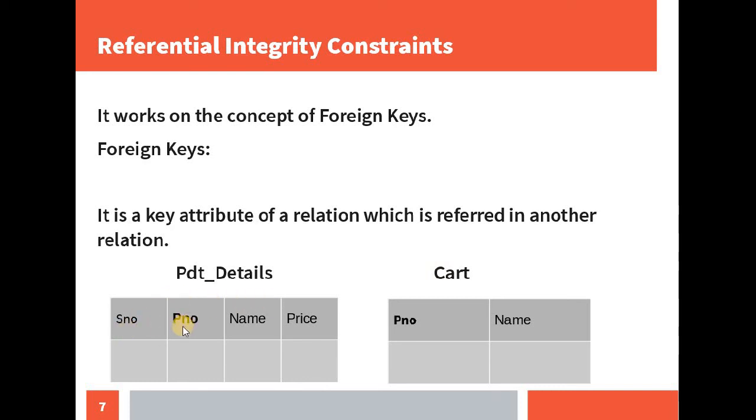Here, the serial number and product number both combined together is a candidate key. And in cart, the P number is the primary key or the candidate key. Here, the P number and serial number refers to the name and price of the product. And the product number can identify the name of the product. The same product number which is described in the product details is being referred to in the cart table as shown. And this is the concept of foreign keys.